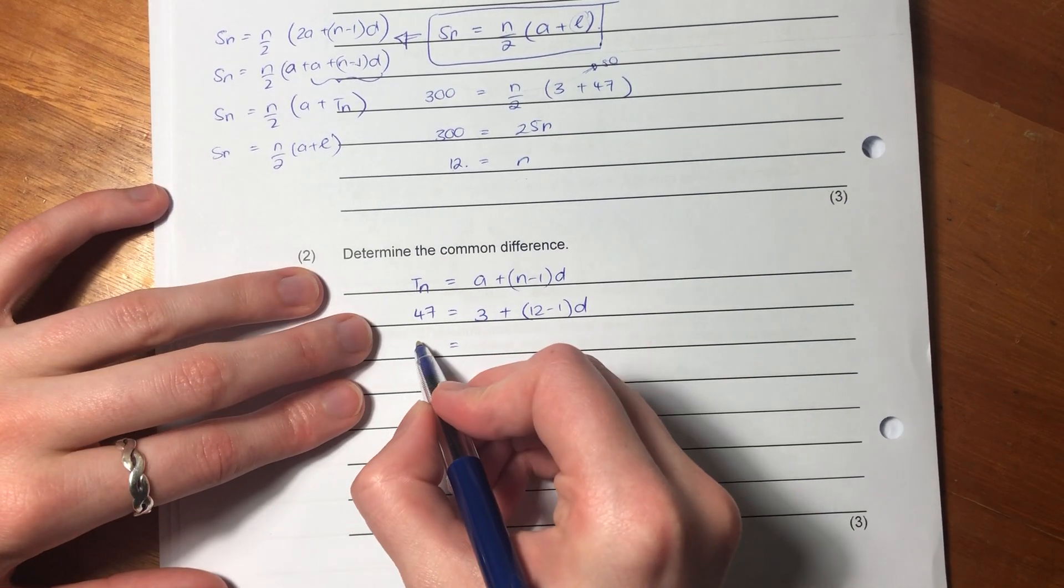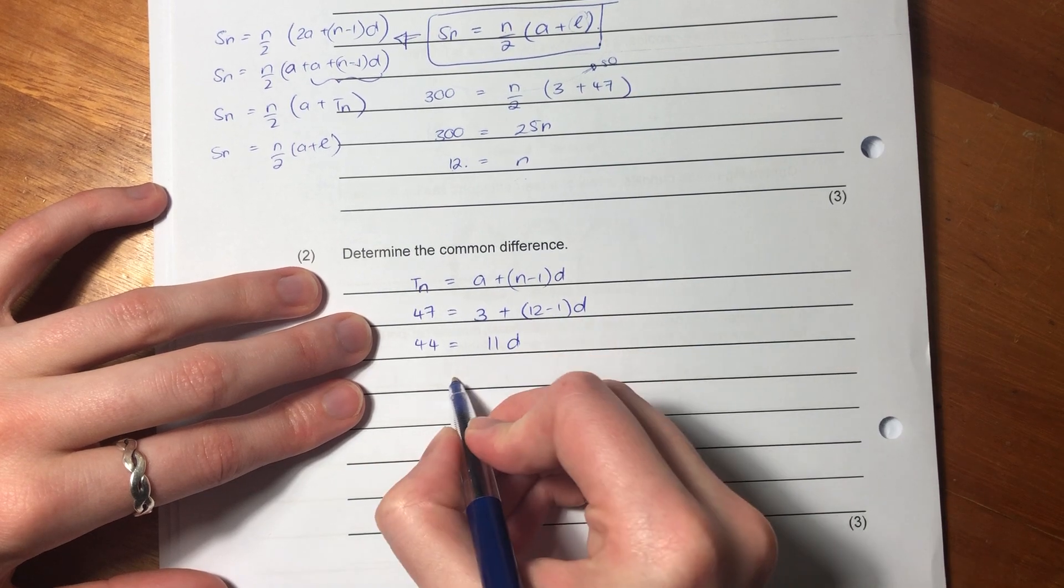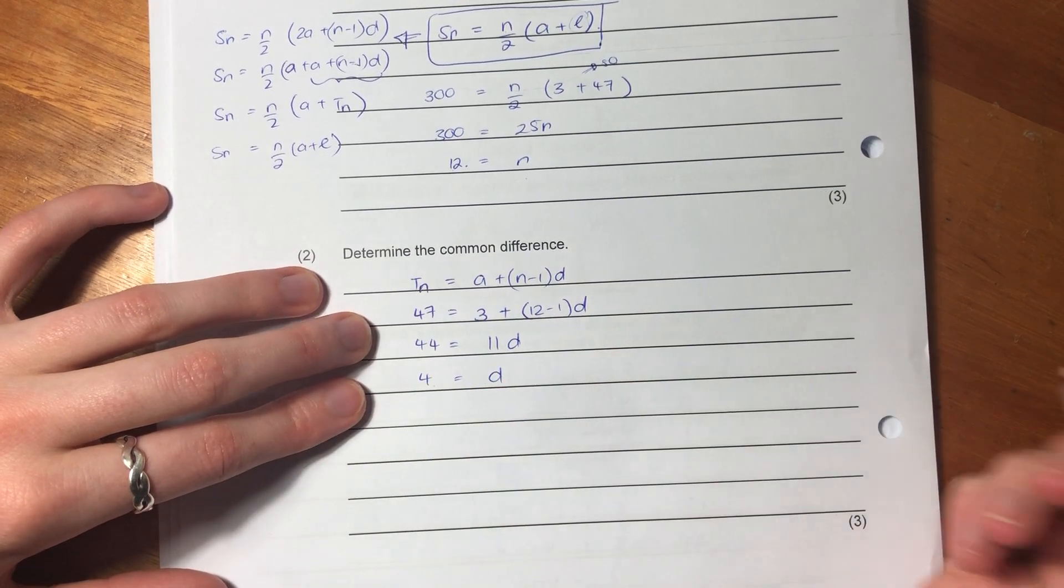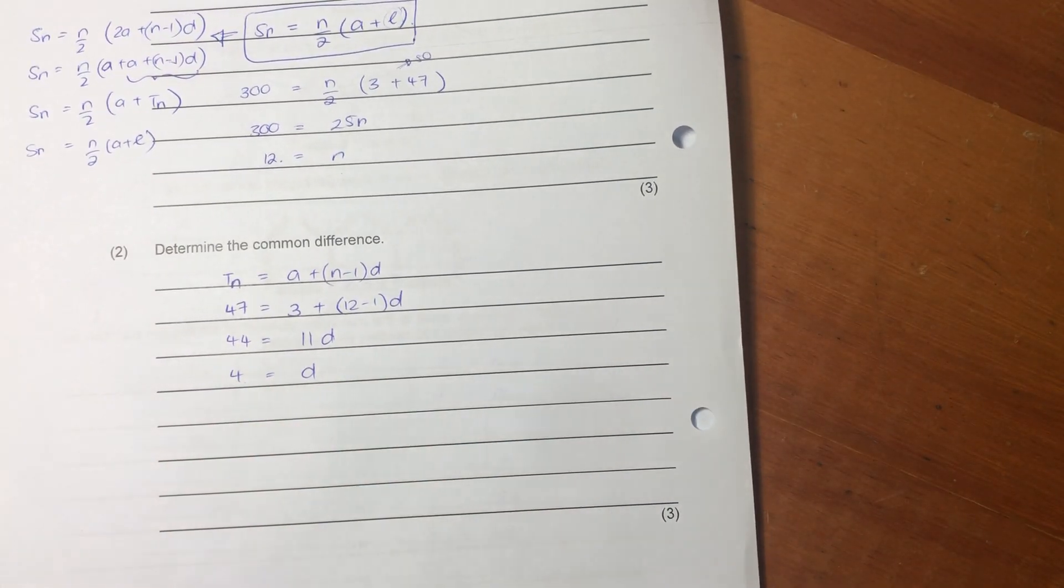I'm going to bring the 3 this side and it's going to be 44 and that's going to be 11 D. So D is going to equal 4. So our constant difference is still 4, similar to what we had over here with our previous one. But this here is also 4.